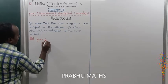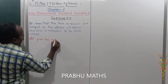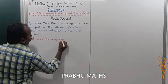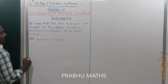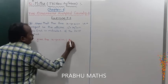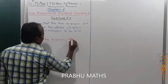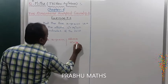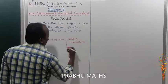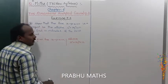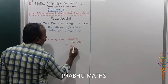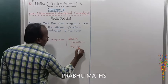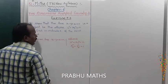The given line is x minus y plus 4 is equal to 0. The given ellipse is x square plus 3y square is equal to 12. Dividing through by 12, this becomes x square divided by 12 plus y square divided by 4 equal to 1.